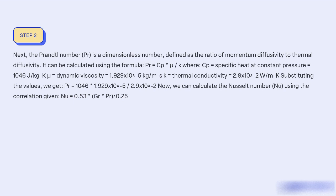Cp = specific heat at constant pressure = 1046 J/(kg·K), μ = dynamic viscosity = 1.929×10⁻⁵ kg/(m·s), k = thermal conductivity = 2.9×10⁻² W/(m·K).